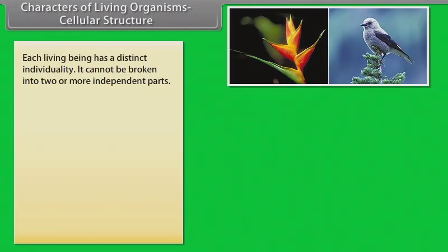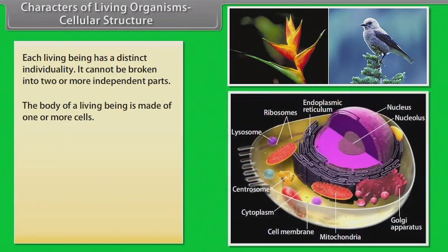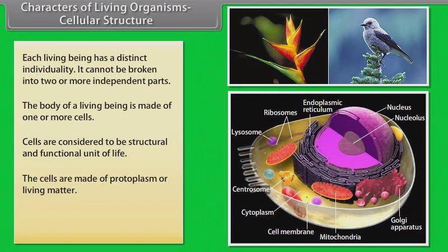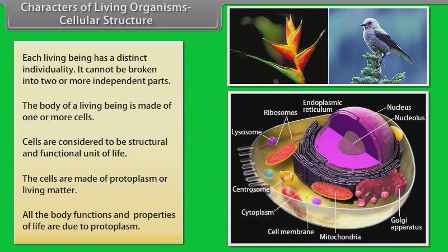Each living being has a distinct individuality. The body of a living being is made of one or more cells. Cells are considered to be a structural and functional unit of life. The cells are made of protoplasm or living matter. All the body functions and properties of life are due to protoplasm.